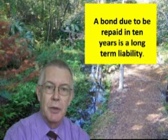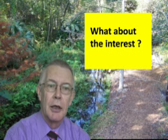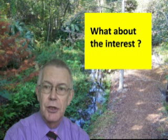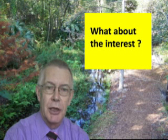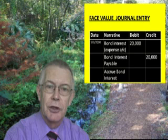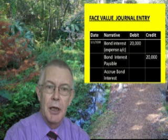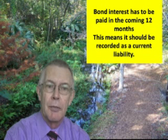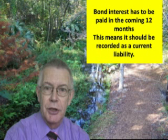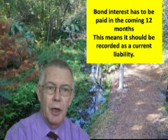The next entry to be recorded will be the interest that has to be paid to the bond holders. It is probable that in the financial statements this will first appear as a liability. The investors will expect their interest to be paid fairly promptly after the year end, so it will be recorded in an account that is a current liability. The expense of bond interest will be a debit, and the liability will be recorded in an account known as bond interest payable. Remember that a current liability is one that is due within the next 12 months.